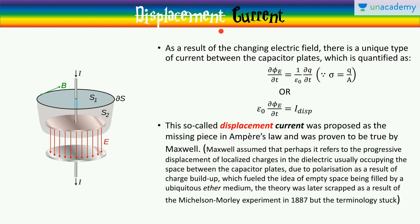Now, I have changed how the title looks in this slide, because there is really no displacement that occurs that has been proved so far. Now, Maxwell assumed that perhaps the current that is seen refers to the progressive displacement of localized charges in the dielectric, usually occupying the space between the capacitor plates. Now, due to polarization as a result of charge buildup, this fueled the idea of empty space being filled by a ubiquitous luminiferous ether medium, the theory of which was later scrapped as a result of the Michelson-Morley experiment in 1887. But the terminology displacement current stuck.